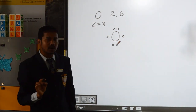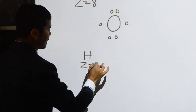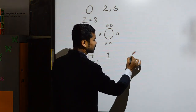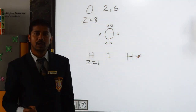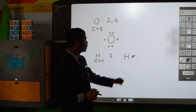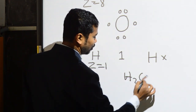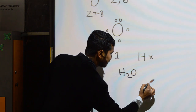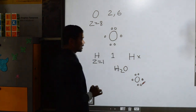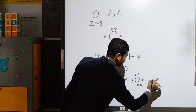If we look at hydrogen, whose atomic number is 1, its electronic configuration is also 1 — it has only one valence electron, so it needs one more electron to complete its duplet. In the water molecule H₂O, oxygen has 6 valence electrons and hydrogen has 1 valence electron.